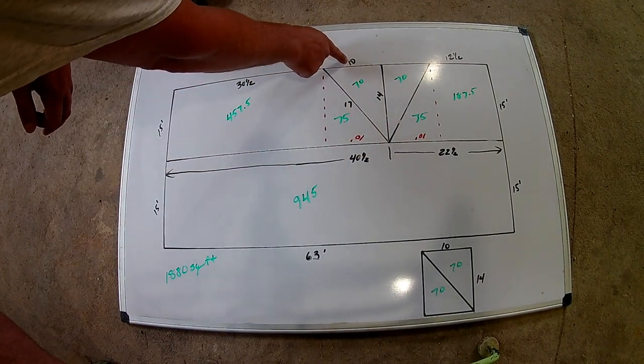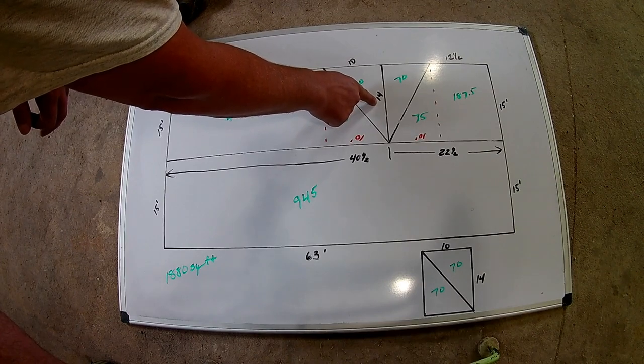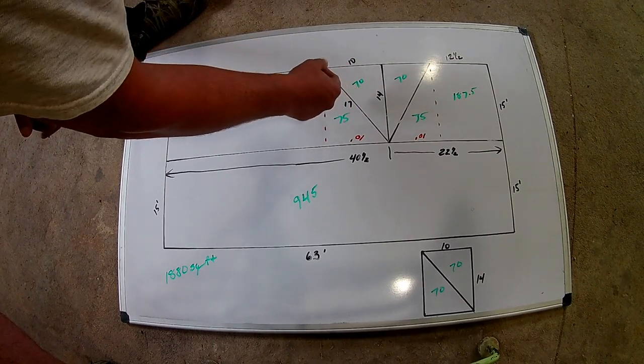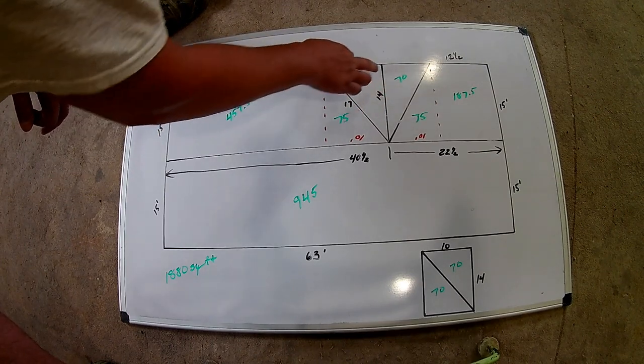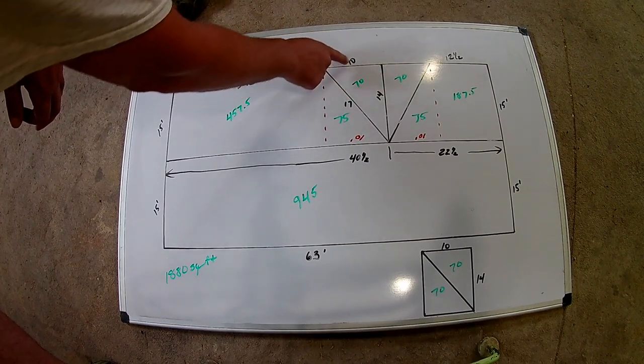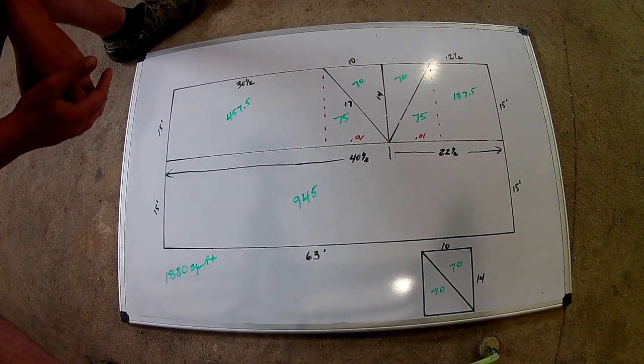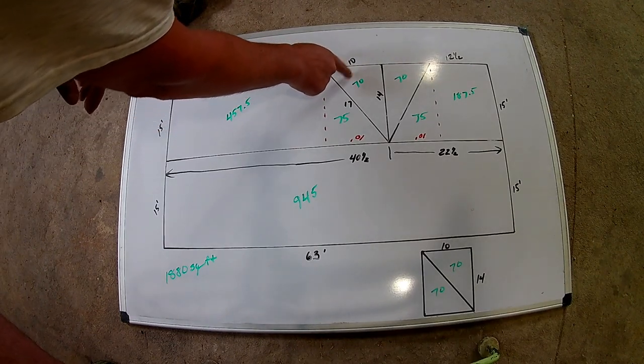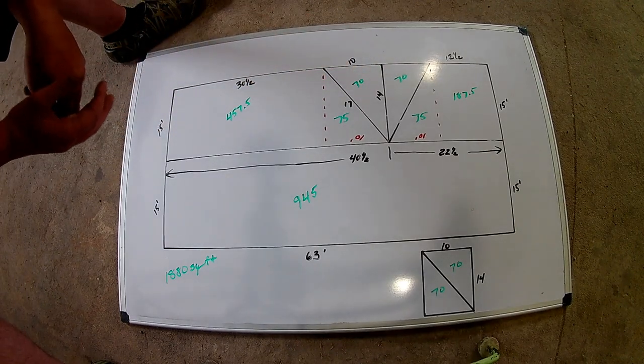And here we know we have 10 feet here, 14 feet here. We're going to multiply those, divide that by 2. Since we have 2, we know that each one is 70. 10 times 14 is 140. Divide that by 2 and we get 70.